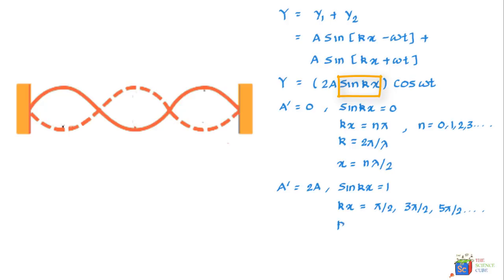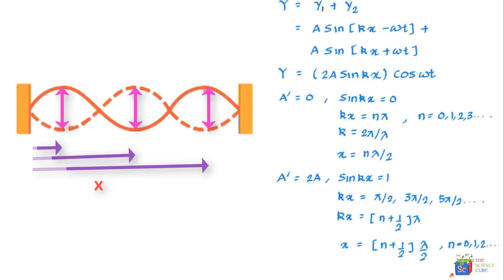Or we can say that kx should equal n plus 1 by 2 pi. And again if k is equal to 2 pi upon lambda then what you get is x is equal to n plus half lambda upon 2 for all n values of 0, 1, 2 and so on. So you get your antinodes at all these x values.